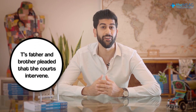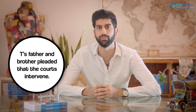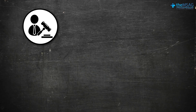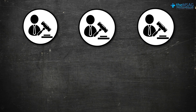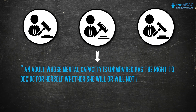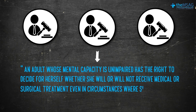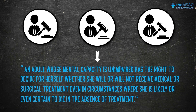She herself deteriorated rapidly and was transferred to the intensive care unit in an unconscious state. The anaesthetist hesitated to transfuse her given her previous refusal, and T's father and brother pleaded that the court intervene. All three judges in the court of appeal committed to the patient's autonomy, with one stating that an adult whose mental capacity is unimpaired has the right to decide whether she will or will not receive medical or surgical treatment, even where she is certain to die in the absence of treatment.